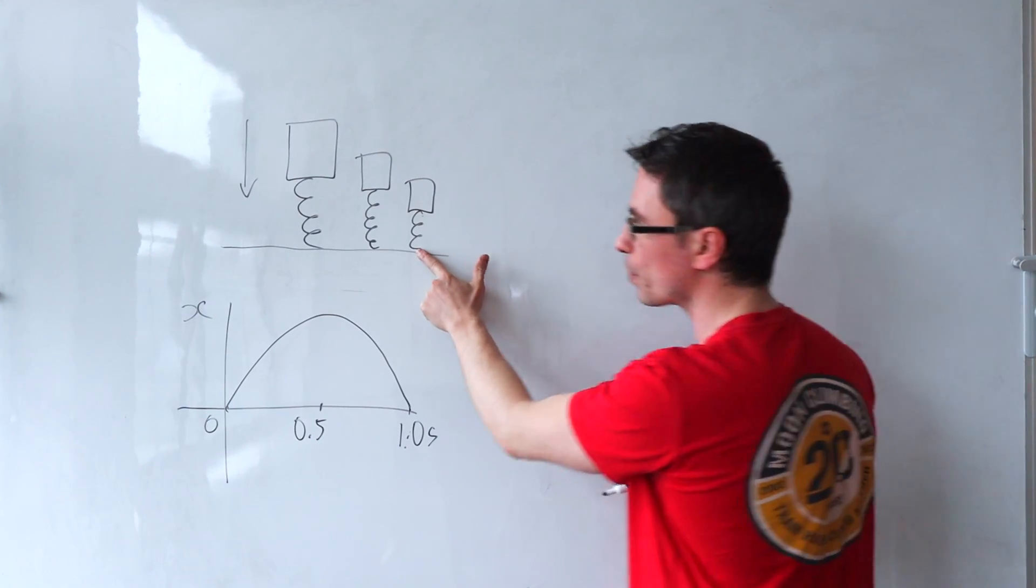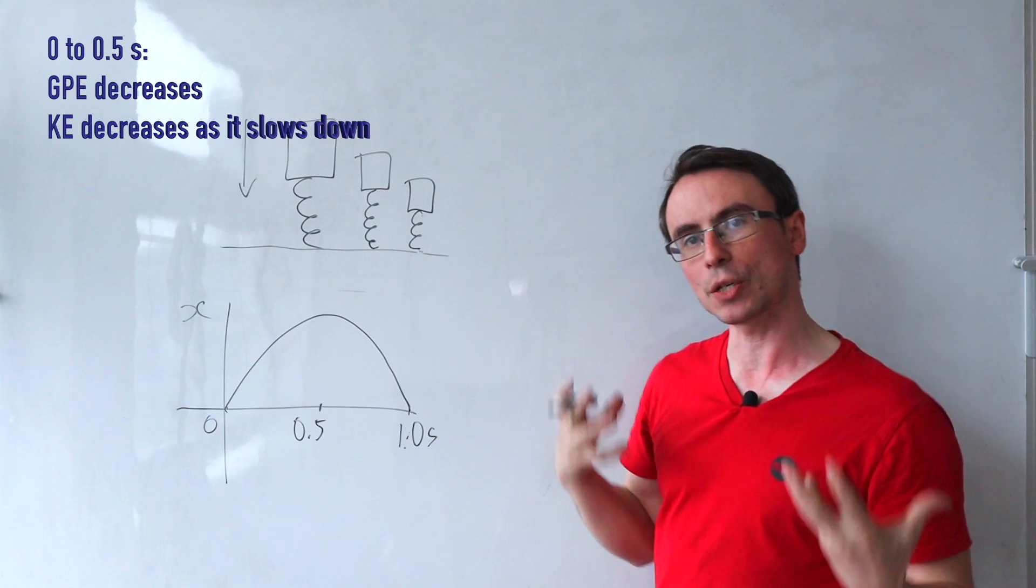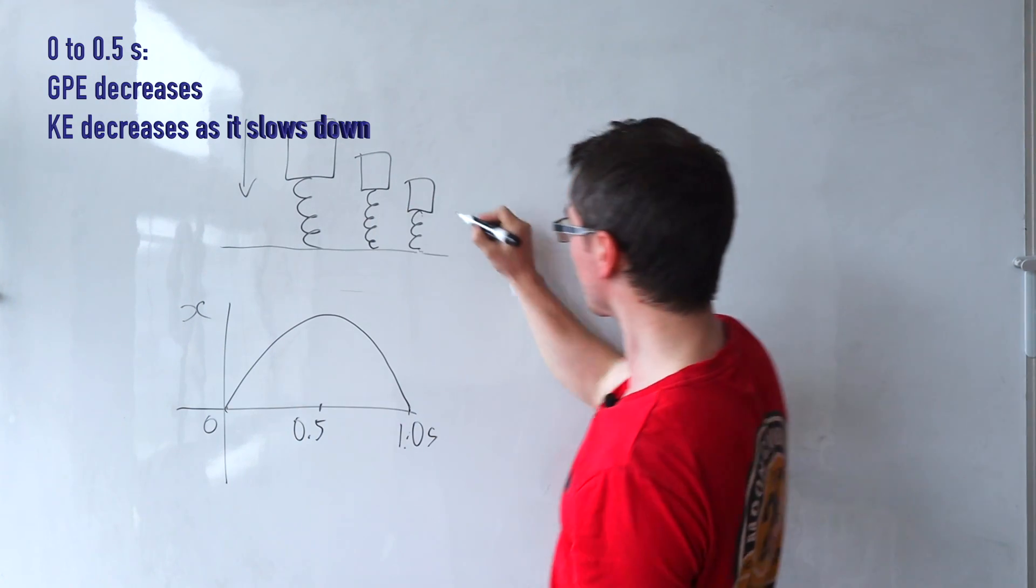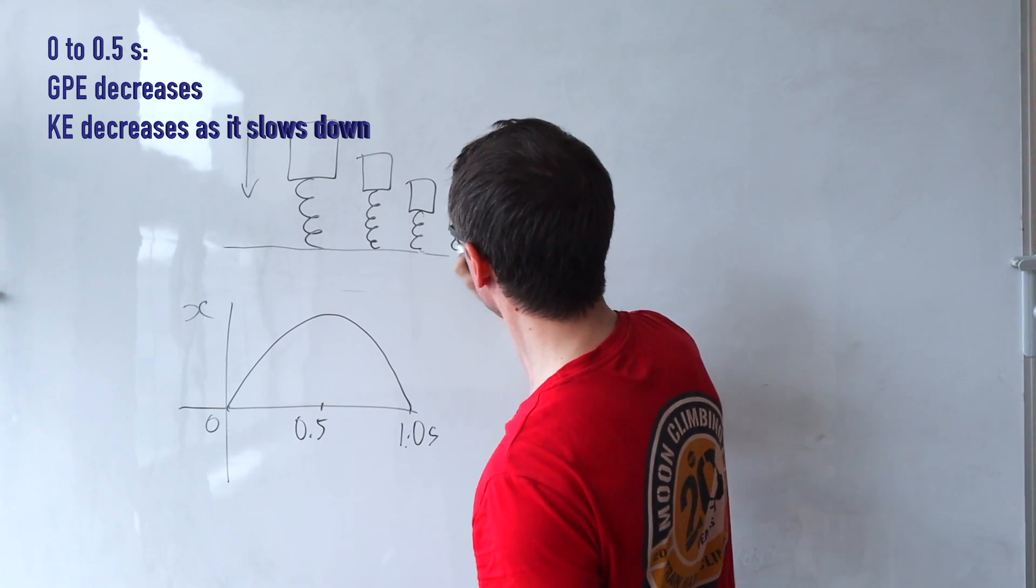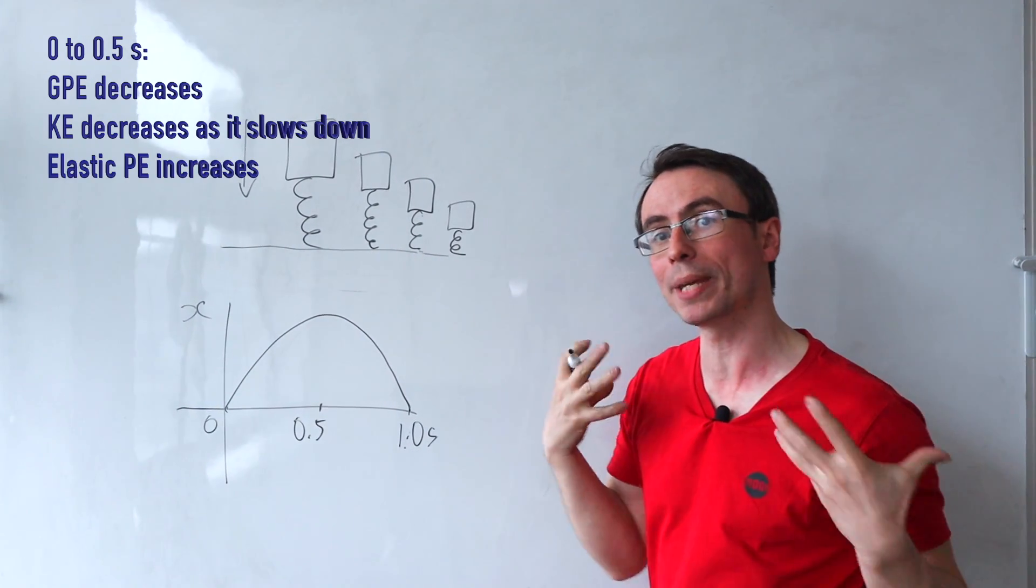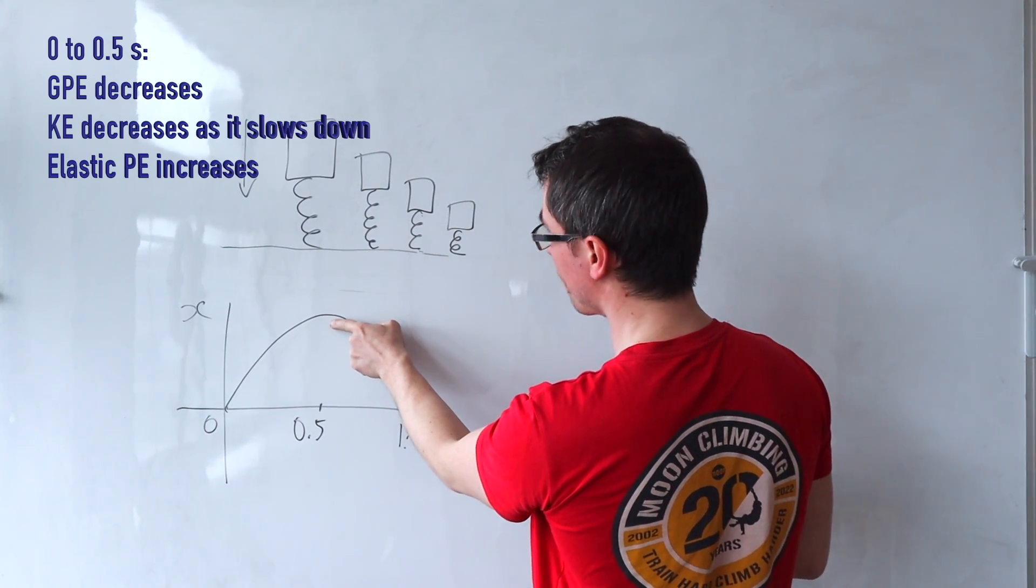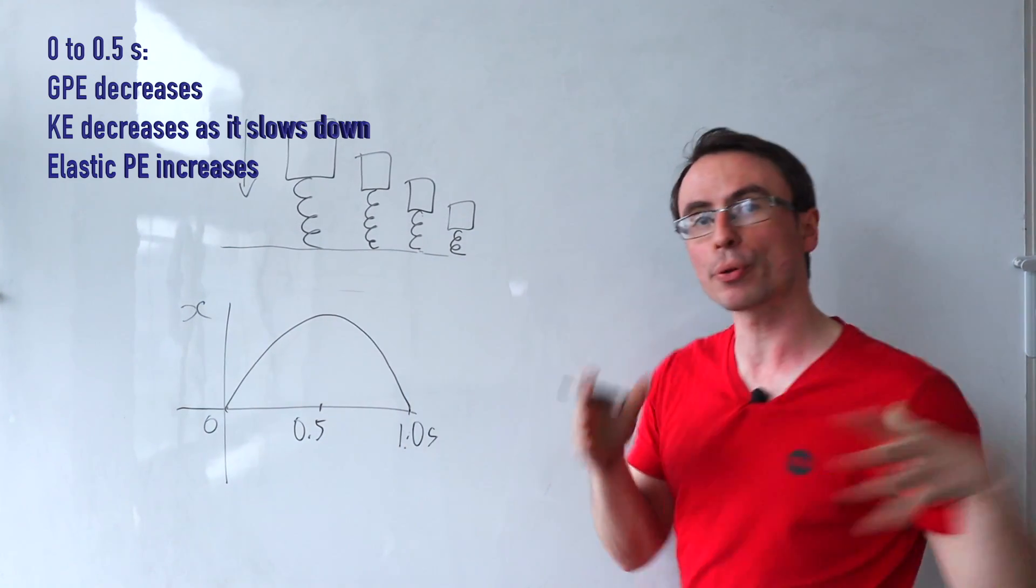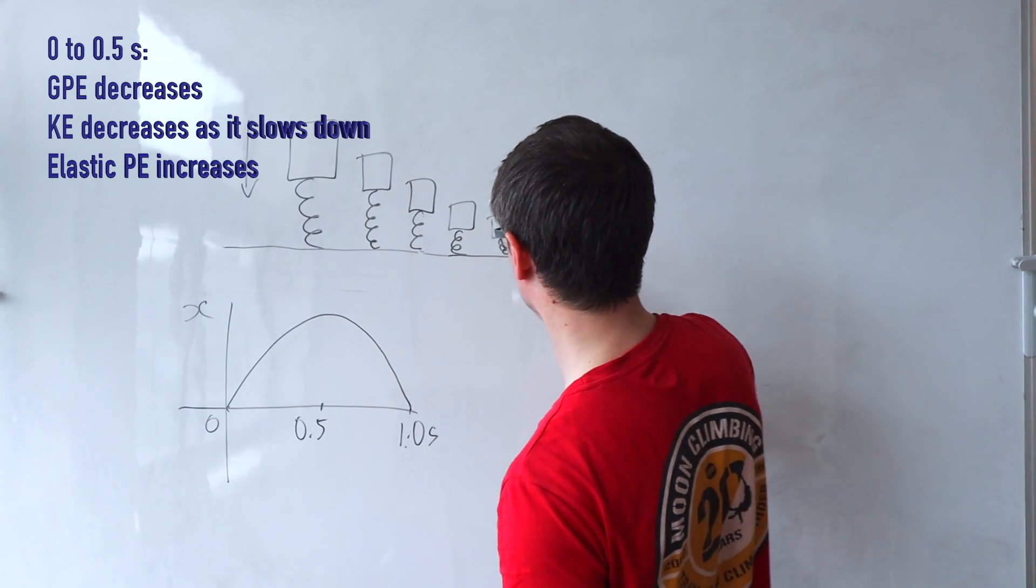As it is compressing, it will be decreasing its gravitational potential energy. Because the spring is being compressed, the elastic potential energy will be increasing. At t equals 0.5 seconds, the compression will be at a maximum.